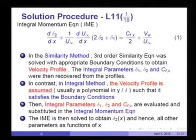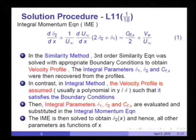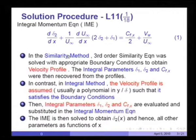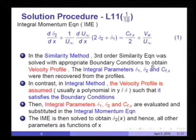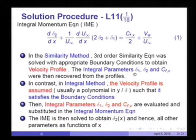To refresh our memory, the integral momentum equation reads as: d(δ2)/dx plus (1/u∞)(du∞/dx) plus 2(δ2/δ1) equals Cfx/2 plus vw(du∞w)/2. The procedure here is quite the reverse of what we adopted for the similarity method. In the similarity method, a third-order similarity equation was solved with appropriate boundary conditions to obtain the velocity profile, and from it the integral parameters δ1, δ2, and Cfx were recovered by integrating and differentiating the profiles.